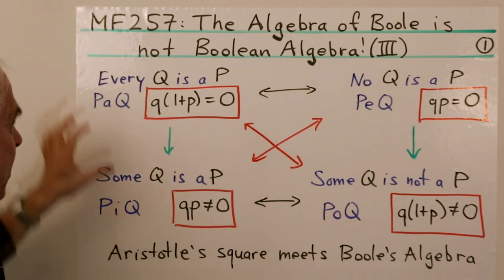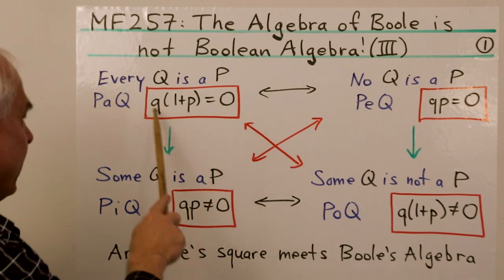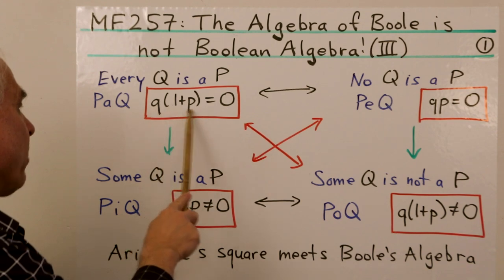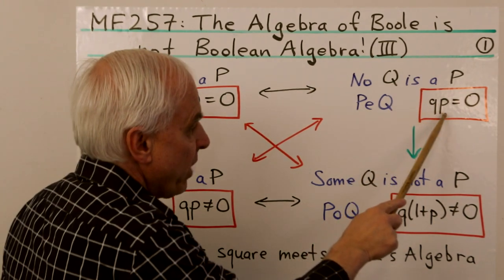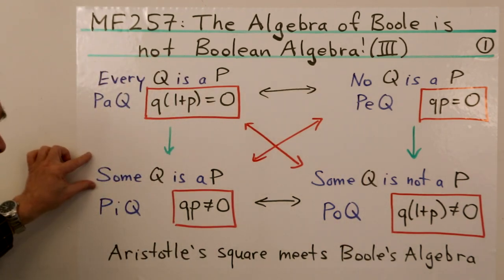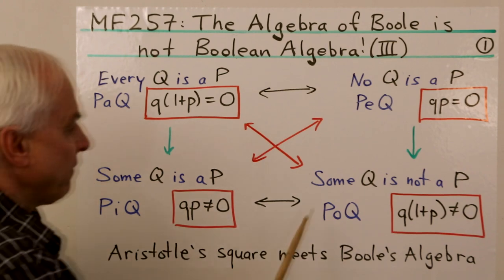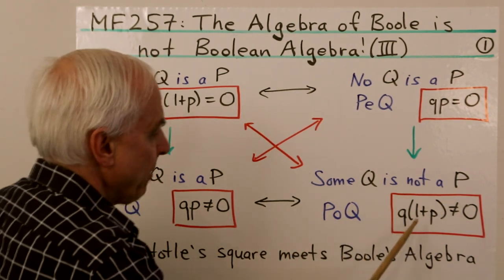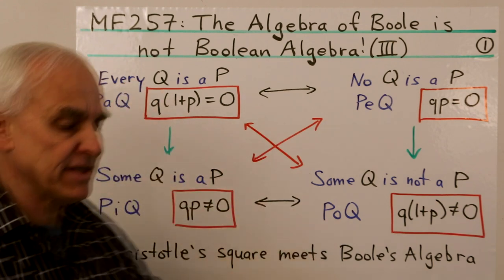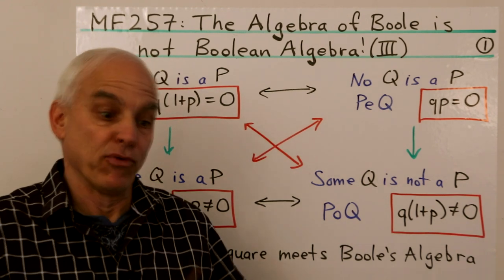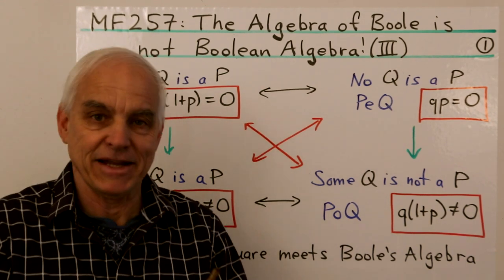Let's remind ourselves what they are. The four forms are: every Q is a P, written in Aristotle's notation as P-A-Q, and in Boole's reformulation as Q times (1 + P) = 0. No Q is a P, written P-E-Q, expressed by Q·P = 0. Some Q is a P, that's P-I-Q, expressed by Q·P ≠ 0 — the contradiction of the previous. And finally, some Q is not a P, represented by Q times (1 + P) ≠ 0, symbolically P-O-Q. These are the ingredients in Aristotle's syllogisms, and in the last video we proved all of the first and second figure syllogisms using Boole's algebra.